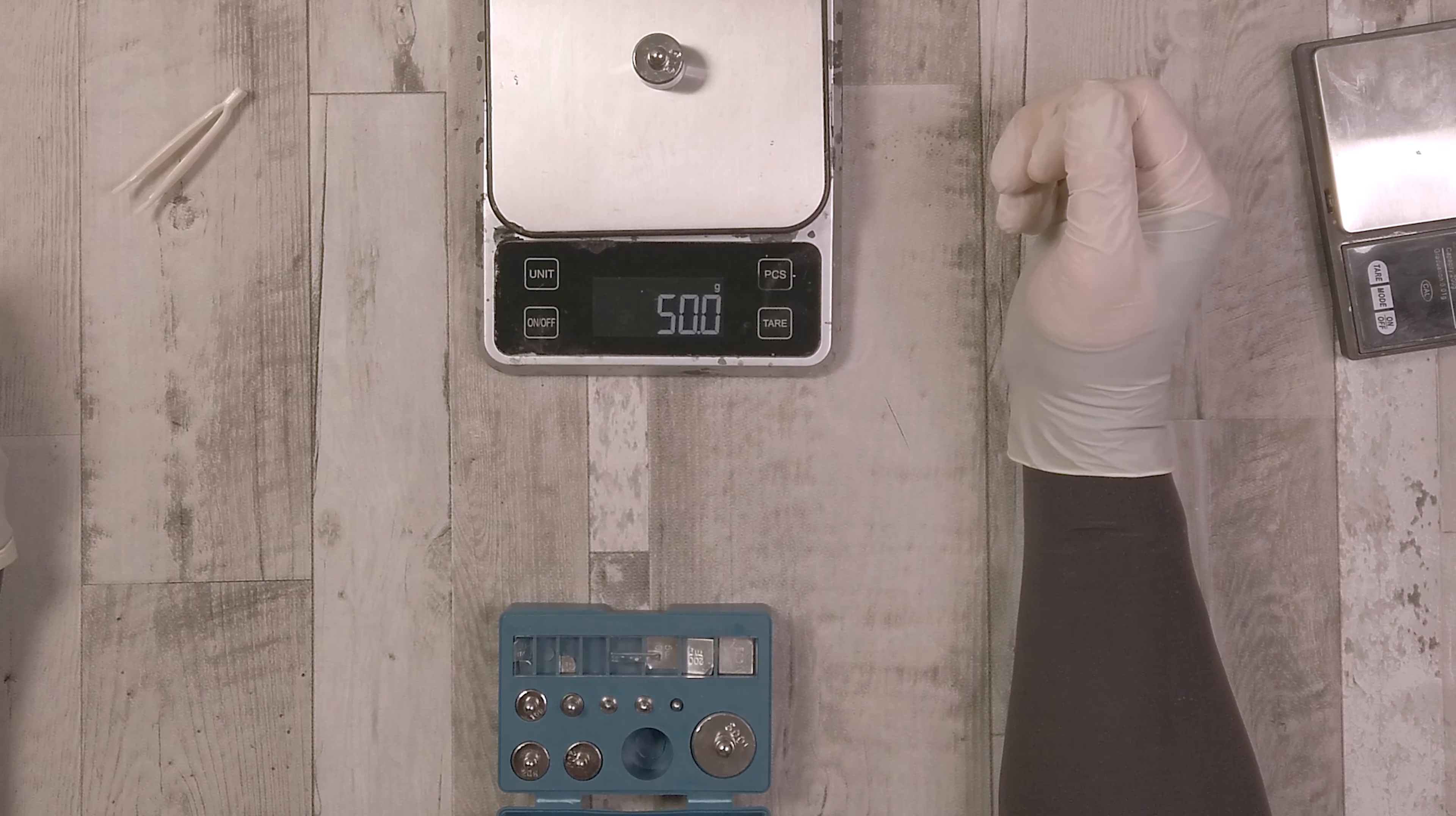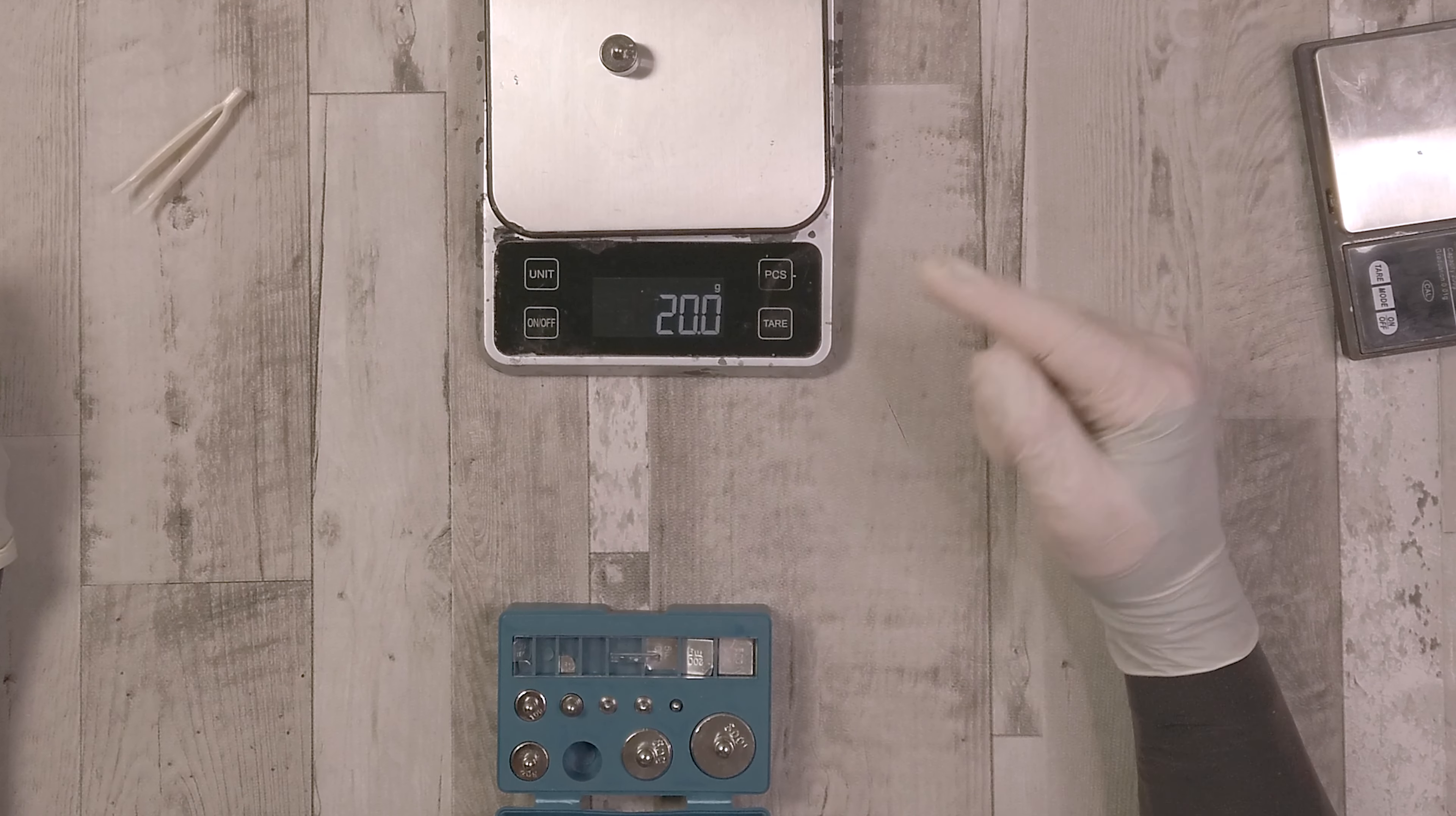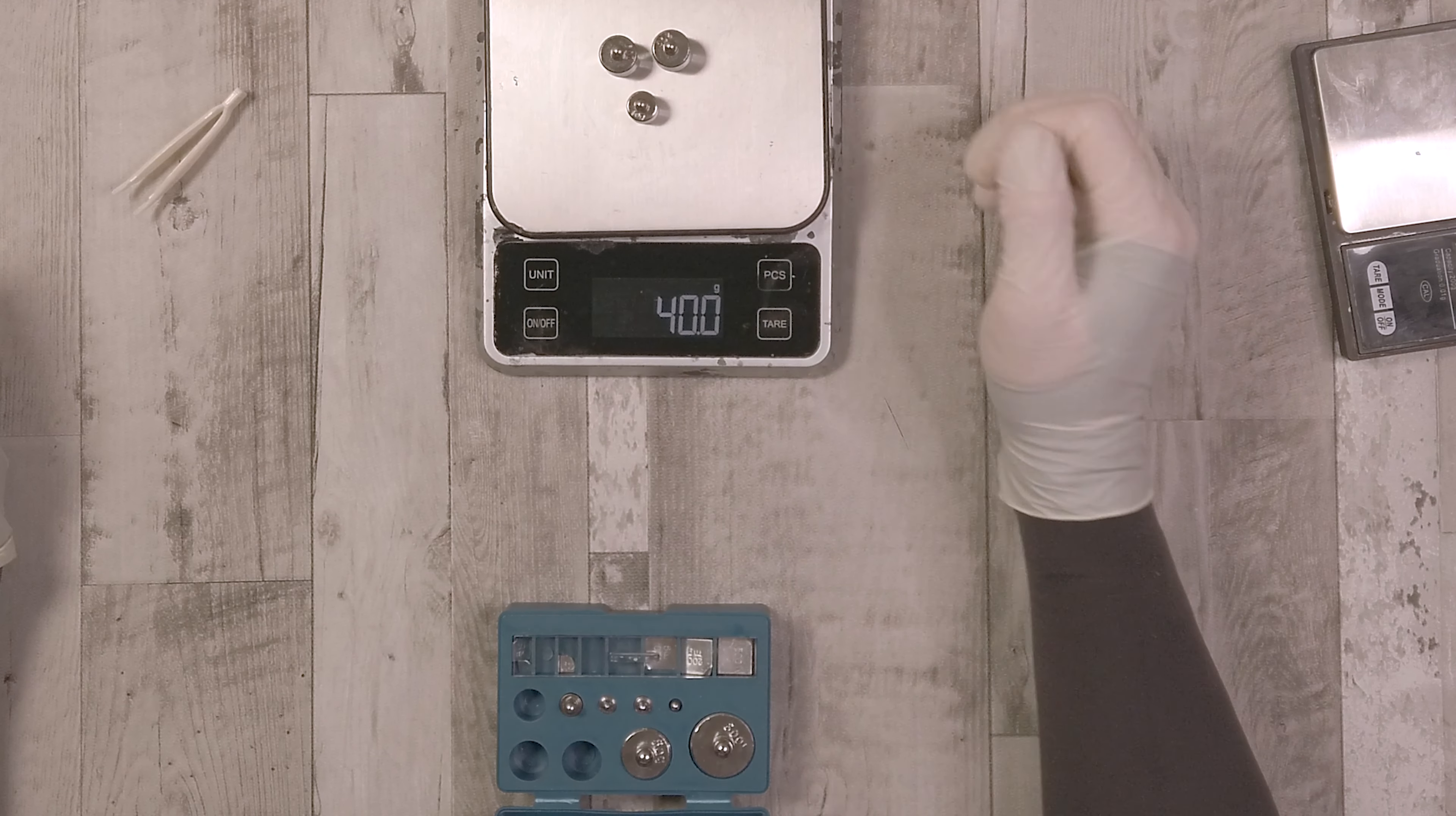Now if we look at the 50 gram weight, it's here and again it's going to be on there. If you're part of forums online you'll often hear people going, I think my scales are out and I don't know whether they're accurate. This is the way that you can check your scales to make sure that they are relatively accurate.